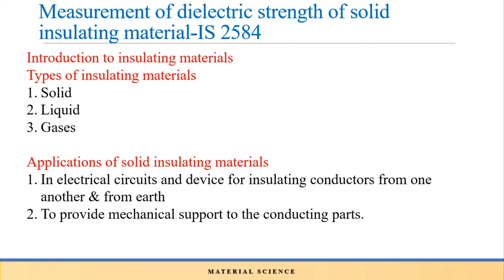We can classify insulating materials based on their physical state as solid insulating material, liquid insulating material, and gaseous insulating material. In general, insulating materials are used in electrical circuits and devices for insulating conductors from each other or from the earth, and also to provide support to the conducting parts.